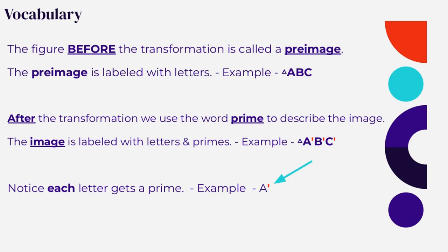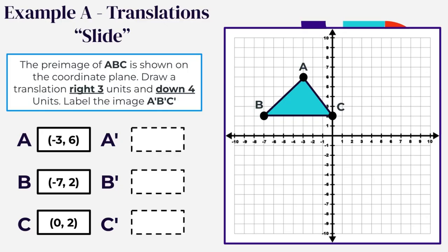Now let's take a look at example A. The pre-image of triangle ABC is shown on the coordinate plane. Draw a translation of right three units and down four units and label the image A prime, B prime, C prime. In order to perform a translation, or a slide, all we need to do is count from where our point is on the graph. So for A, we count three to the right and then four down. Surprisingly, A prime lands right where C is located.